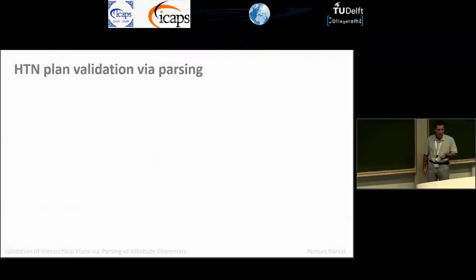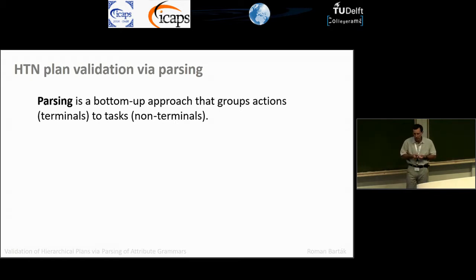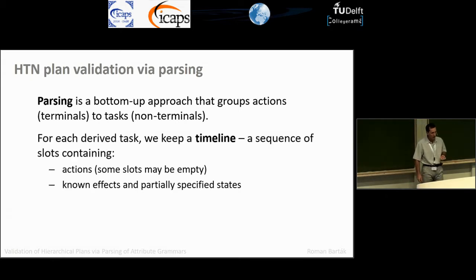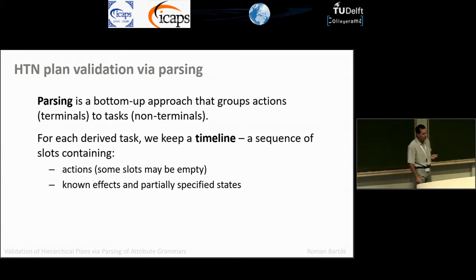For validation, we use parsing — an approach to recognize whether a given sentence belongs to a language described by a grammar. It's done in a bottom-up way: we collect terminals (actions) and form tasks, building the hierarchical structure from the bottom to the top. For each task, we keep what we call a timeline — a sequence of slots describing states generated during task execution.